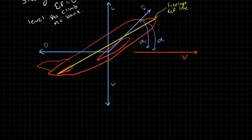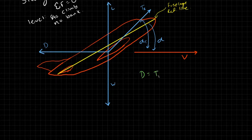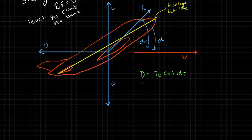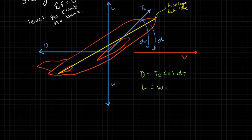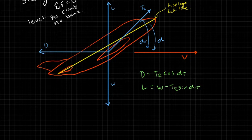Let's analyze the forces. Summing forces in the direction of the velocity — the x-direction — we find that drag equals T_r times cosine of alpha_t. Summing forces in the vertical direction, we find that lift equals weight minus T_r times sine of alpha_t.